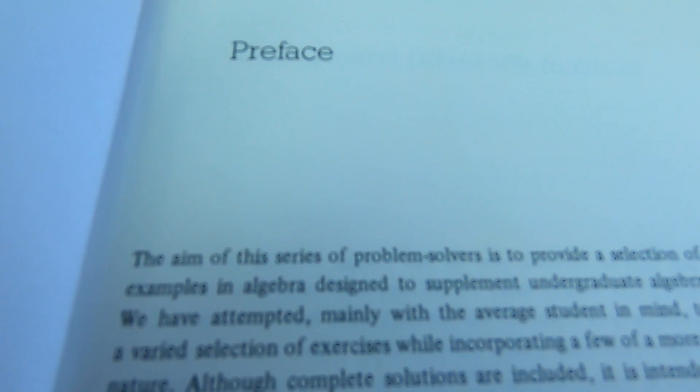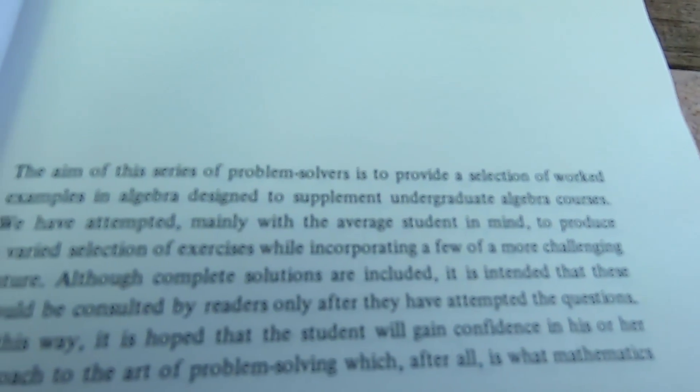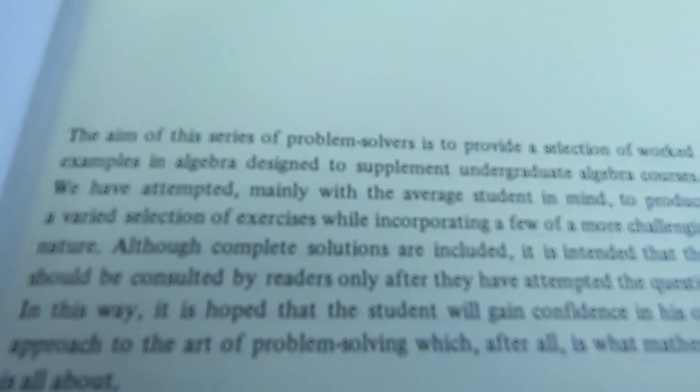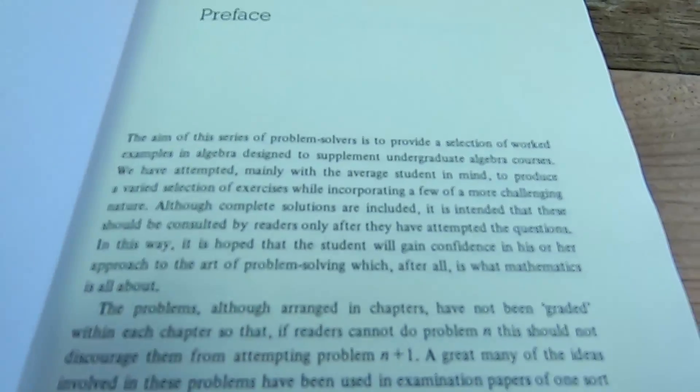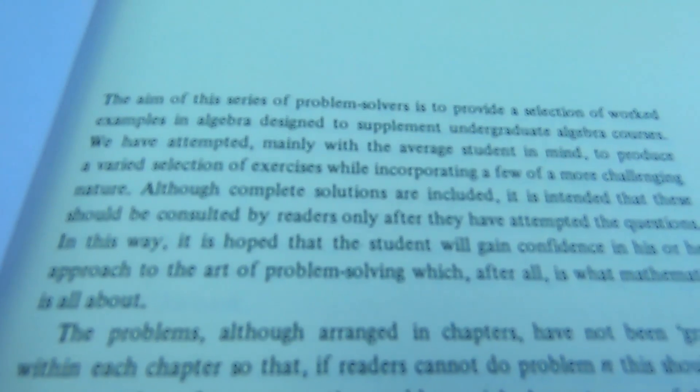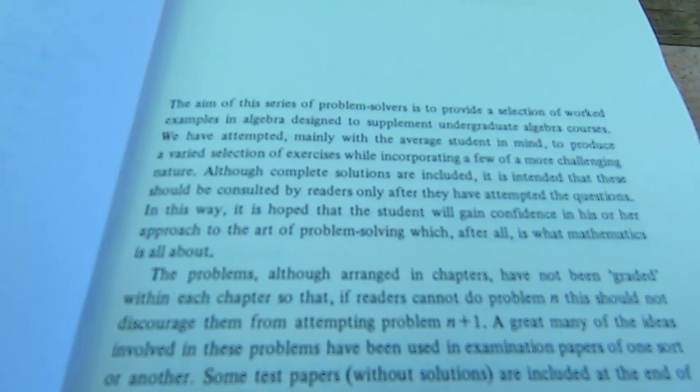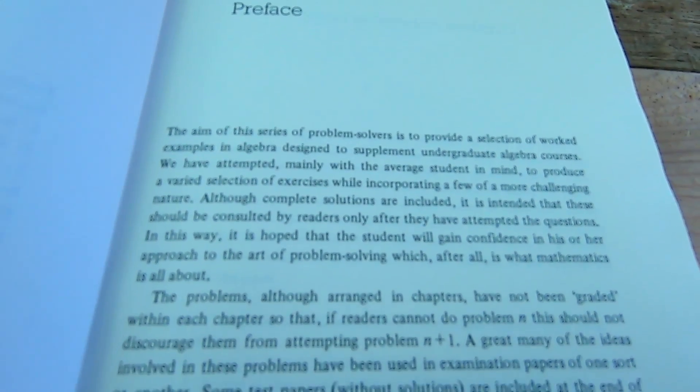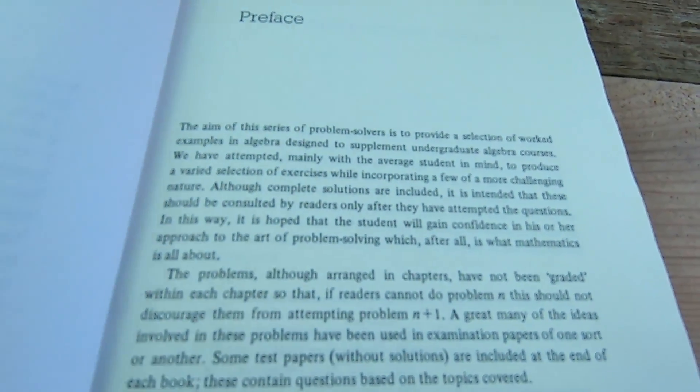This is the preface. It says, the aim of this series of problem solvers is to provide a selection of worked examples in algebra designed to supplement undergraduate algebra courses. So I believe there are six books and again, this is the first book which is on sets, relations and mappings. I think I own four of the six and the reason I don't own all of them is because some of the other ones were a little bit more expensive. If you can find this copy for a few dollars, I highly recommend you buy this book and I say that not only because it's a good book but because the prices vary. Several years ago I tried to buy this book and I could not get it for less than $50. I think I picked up this copy for less than $10.